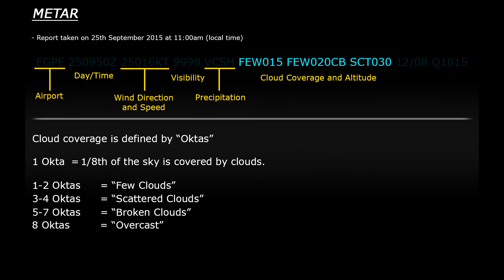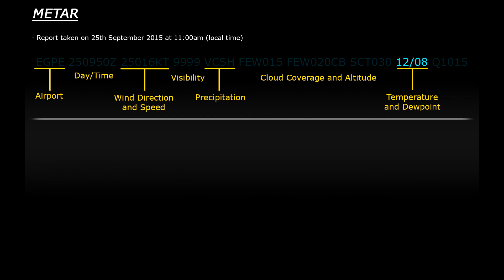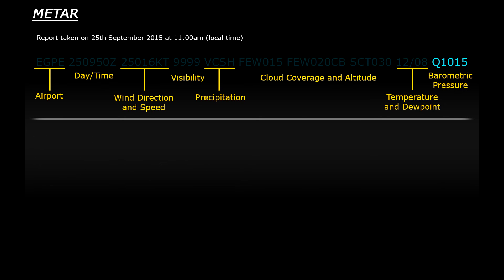So all in all it's a pretty cloudy day up in Inverness — no surprises there! The next couple of numbers represent the temperature and dew point in degrees Celsius. So the temperature here is 12 degrees Celsius and the dew point is 8. Sometimes you may see an M in front of the number which indicates that the temperature is minus whatever the number may be. And then finally on the end you have the barometric pressure — in this case it gives the QNH which is 1015 millibars.